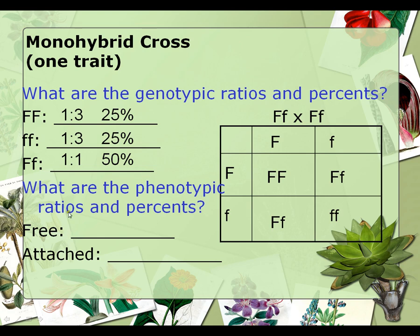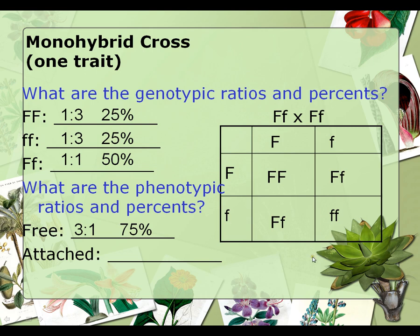Now let's look at the phenotypes of the children. How many will have free earlobes? Three out of four, giving a three-to-one ratio at 75%. How many will have attached earlobes? Just one — there will be three that do not have attached earlobes, so that's 25%.